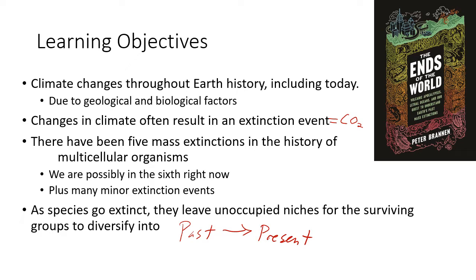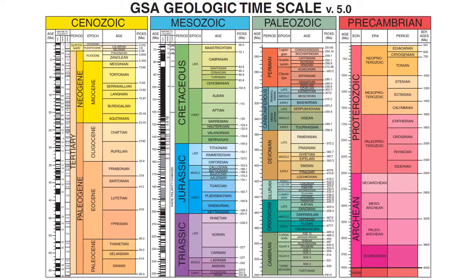There have been five mass extinctions in Earth's history, and we are possibly in the sixth one now. There have also been many minor extinction events. As species go extinct, they leave unoccupied niches for surviving groups to diversify into. One of the key things is that life does go on.